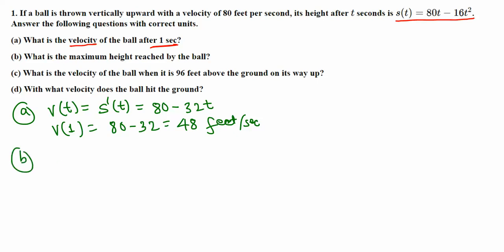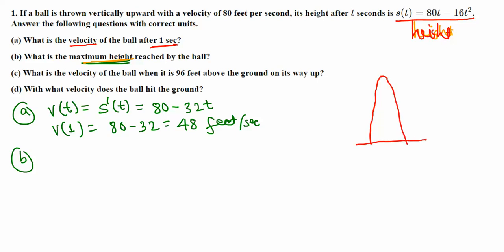In part B, we need to find the maximum height reached by the ball. This is the height function, so if we know the time needed to get to the maximum height, we plug that time into the function to get the height. When we throw something up, the velocity decreases until at some point it becomes zero, and then the ball starts to drop. At the maximum height, the velocity is zero.